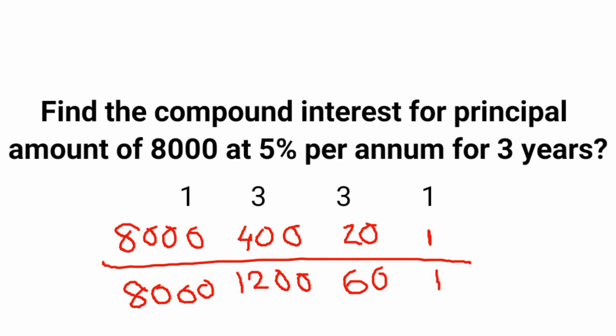Finally, to find the total amount after 3 years, add the values in all columns: 8000 plus 1200 plus 60 plus 1. That is 9200 plus 61, giving 9261. I hope you all understood this shortcut. Thanks folks.